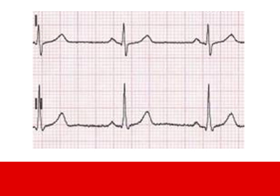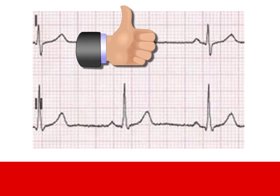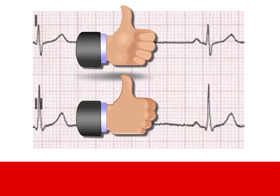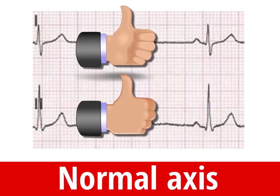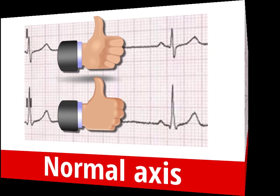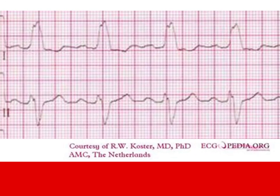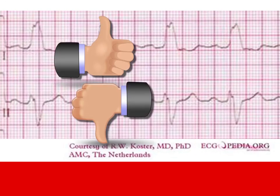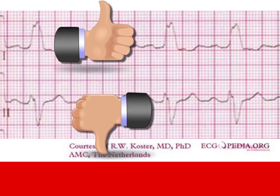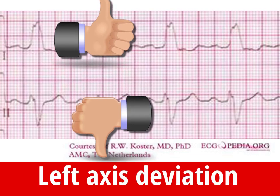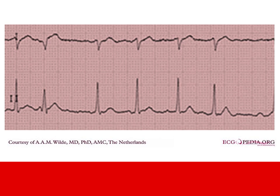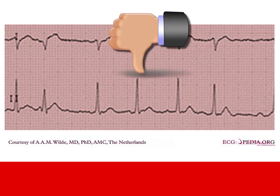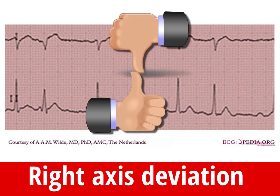Let's try that again. In this ECG, there's two thumbs up so the axis is normal. In this ECG, thumbs have left each other so it's left axis deviation. And finally, in this ECG, thumbs are headed right for each other so it's right axis deviation.